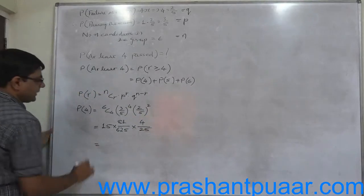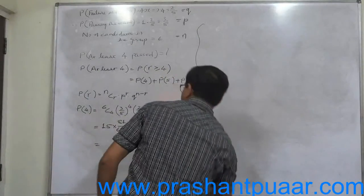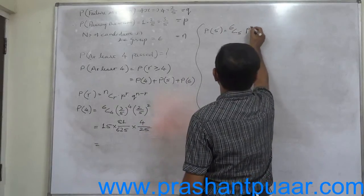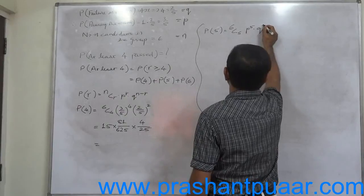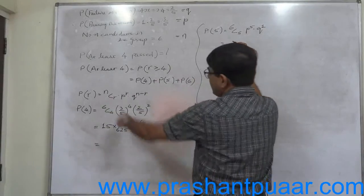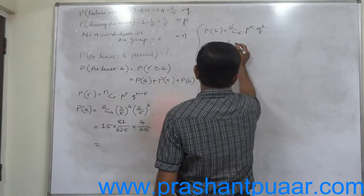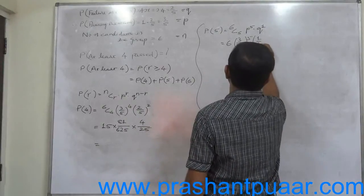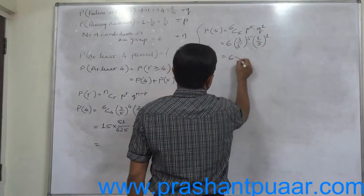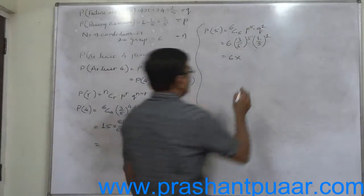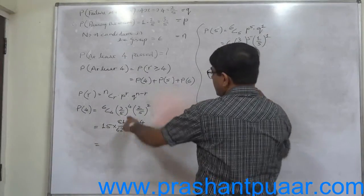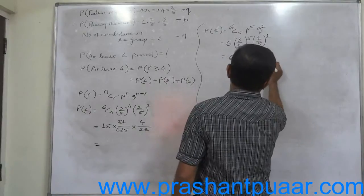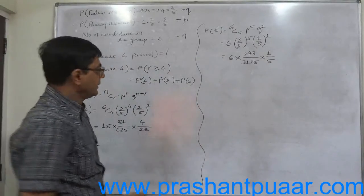P of 5 is 6C5 into P raise to 5 into Q raise to 6 minus 5 means 1. 6C5 is equivalent to 6C1 and it is always 6. Into P means 3 by 5 raise to 5 into Q means 1 by 5 raise to 1. 6 into 3 raise to 5, that means 81 into again 3, 243, divided by 5 raise to 5, it is 3125, and 1 by 5 raise to 1 is 1 by 5.